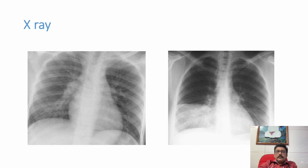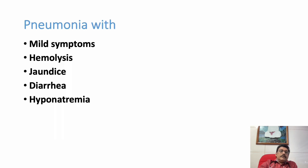Atypical pneumonia X-ray may mimic viral pneumonia, but clinical findings are different — very mild fever, altered behavior, hyponatremia, hemolytic anemia, and diarrhea. Hemoptysis is usually not associated with atypical pneumonia, but jaundice can occur due to hemolysis. When these features are present, we suspect atypical pneumonia.